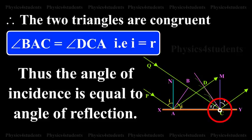Angle BAC is equal to angle DCA. This is I is equal to R.